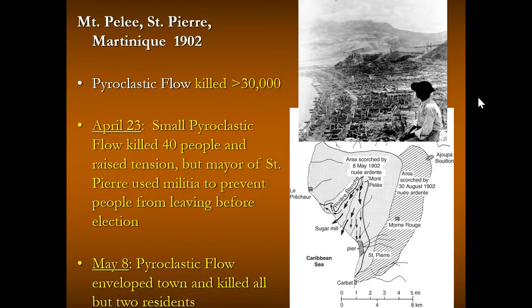Mount Pelée, on the island of Martinique, erupted in 1902 and killed over 30,000 people. Most of them died from the pyroclastic flow from the major eruption. On April 23rd, a small pyroclastic flow killed about 40 people and raised tension in the area.